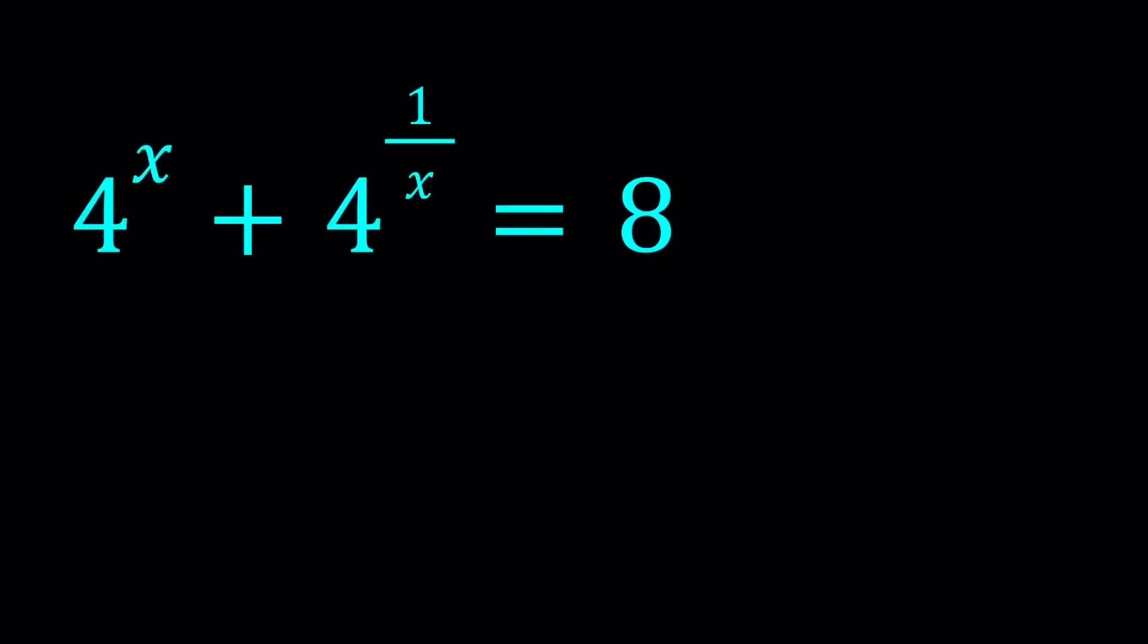And we've done similar problems before. If I can include a link down below, I will. So to solve this equation we're going to be using what is called AMGM inequality. That's the arithmetic mean and the geometric mean being compared. But that only works if our expressions or the terms that we're going to compare are positive.